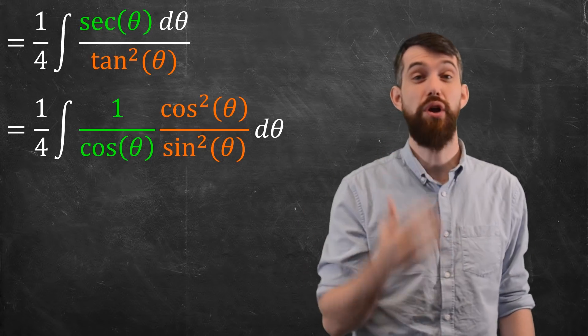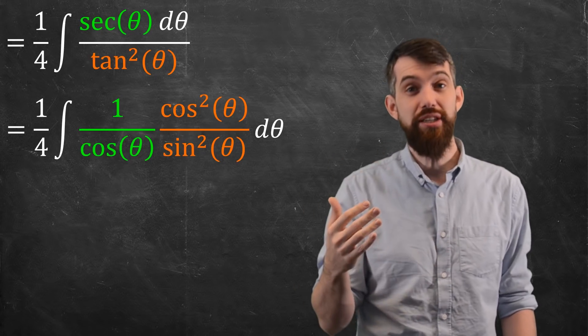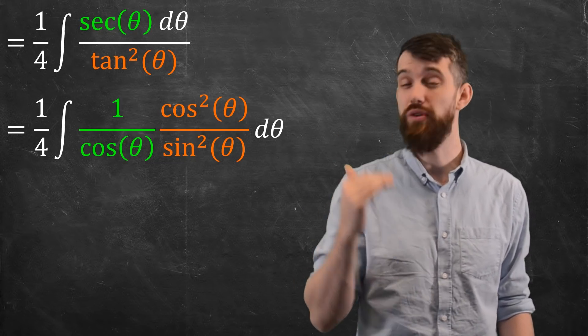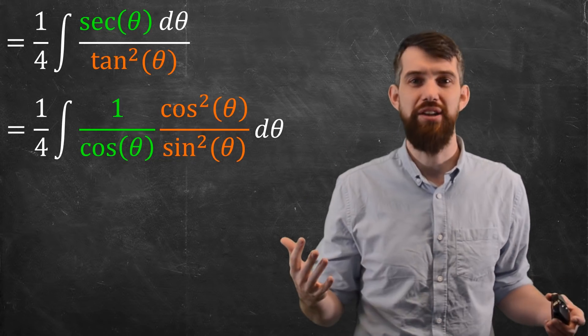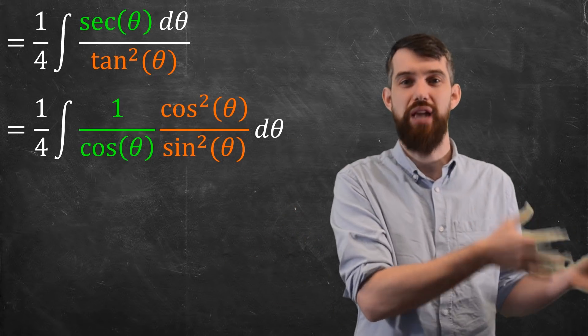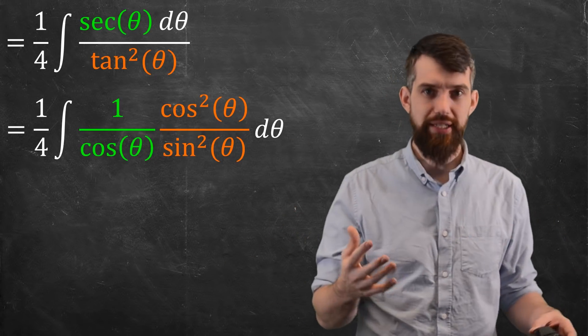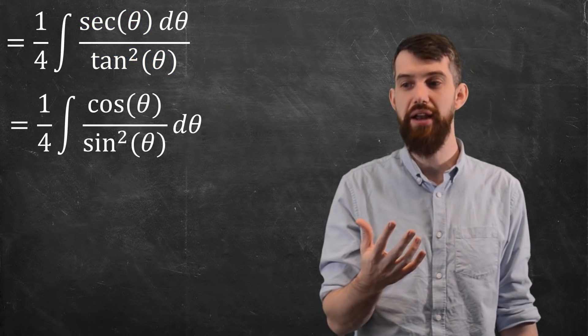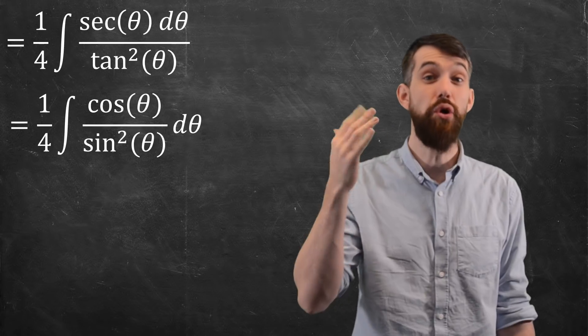That is, the secant is 1 over cosine, the tangent is sine over cosine, but because it's on the bottom, I can flip it so it's cosine squared over sine squared. This is a good strategy. If the secant and tangents aren't obviously working, you could always convert back to sines and cosines. Regardless, now that I've written in terms of sines and cosines, I see there's a canceling of the cosine, and so I can rewrite this as cosine over sine squared.